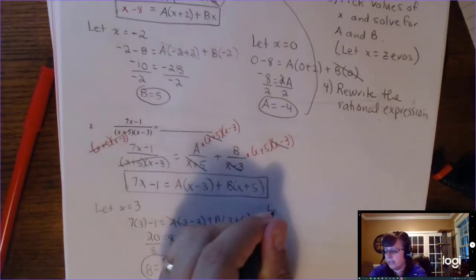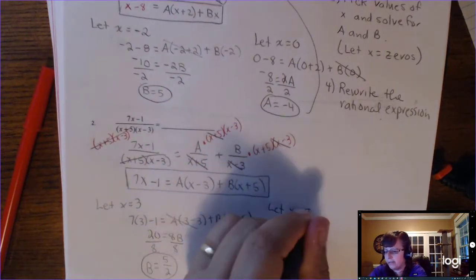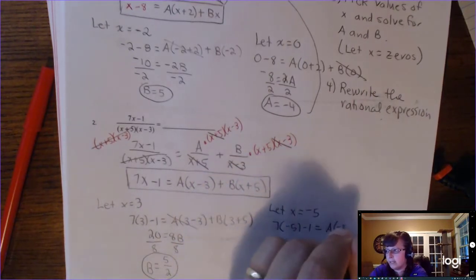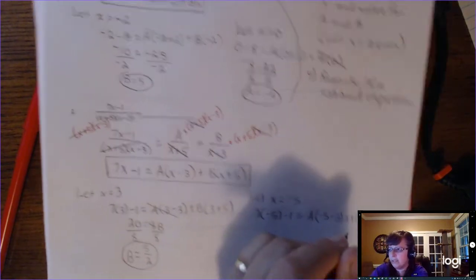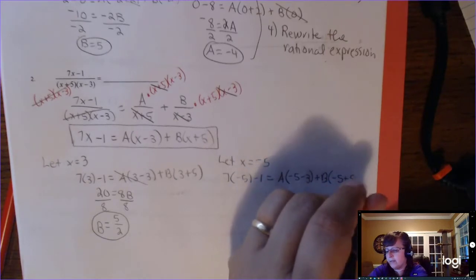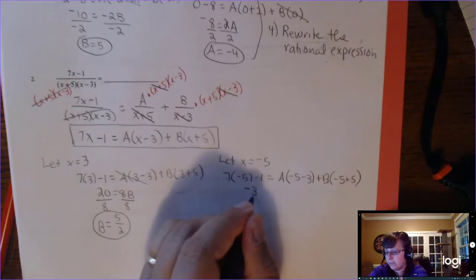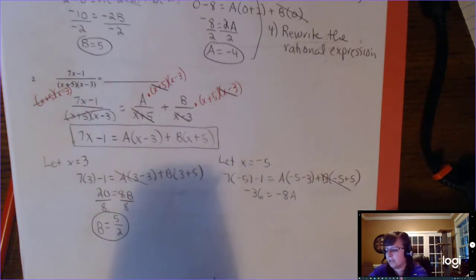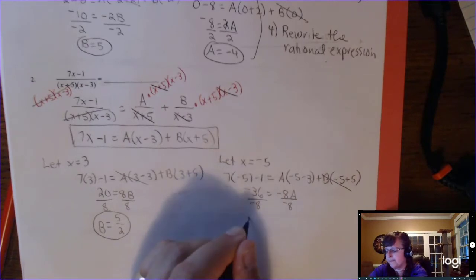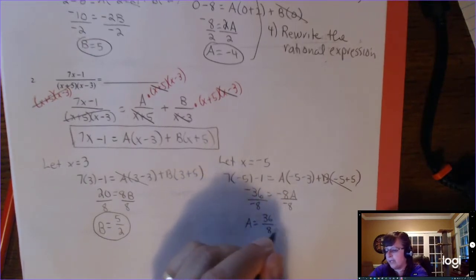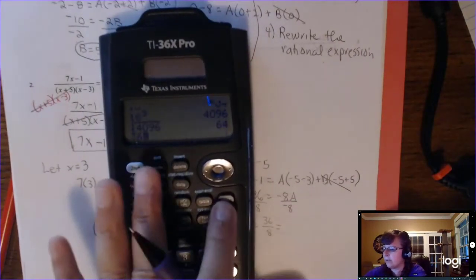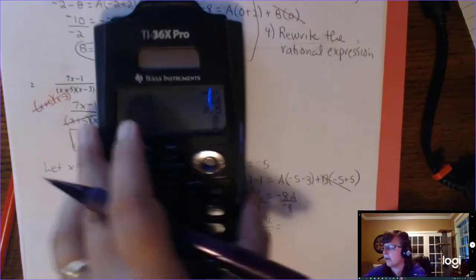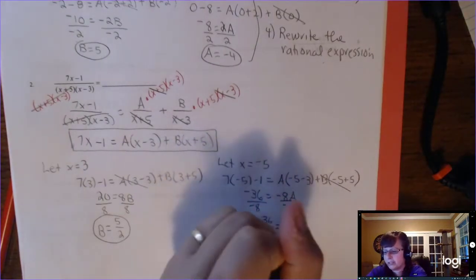Now let x equal the other zero, which is negative 5. That gives 7 times negative 5 minus 1 equals A times negative 5 minus 3, plus B times negative 5 plus 5. That's negative 36 equals negative 8A, and 0 times B which is 0. Divide by negative 8, and A gives you 36 over 8, which reduces. Use your calculator to get the improper fraction — you want the improper fraction, not the decimal.